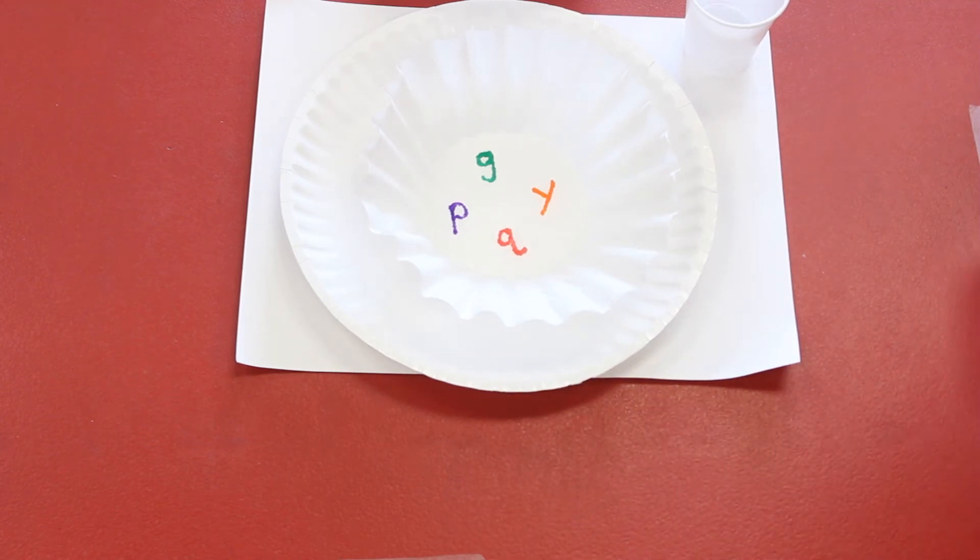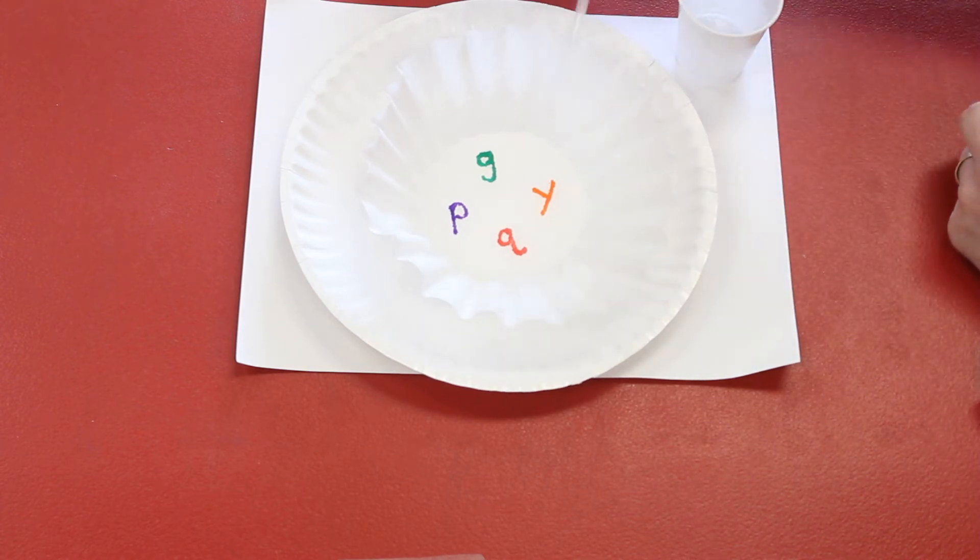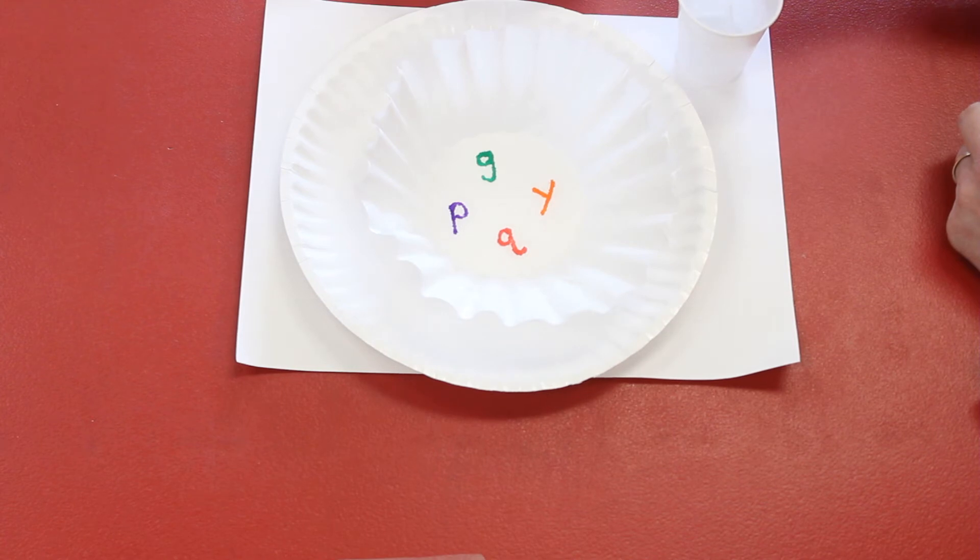All right, so we're gonna make those letters disappear. I want you to take your water dropper and put it inside the water. Squeeze the top and let go, and that fills your dropper with water. I'm gonna tell you to drop some water on a letter and make it disappear.